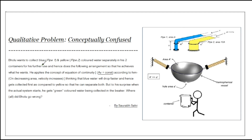Bholu wants to collect blue and yellow colored water separately. Blue water is in pipe one and yellow water is in pipe two. He has two containers for his further use, and he does the following arrangement so that he achieves what he wants.